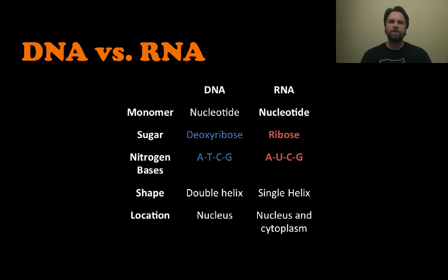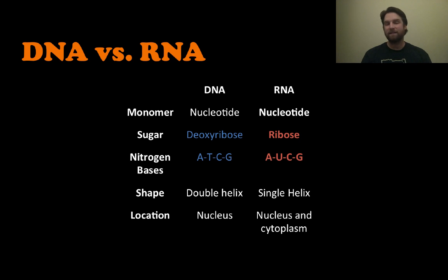Let's look at some differences between DNA and RNA. They're both made of monomer nucleotides, but the sugar is slightly different — deoxyribose sugar in DNA and ribose sugar in RNA. The bases are also slightly different. In DNA we have A, T, C, and G, while in RNA thymine is replaced with U, called uracil. DNA is a double helix while RNA is a single helix. DNA is located in the nucleus while RNA is located in both the nucleus and the cytoplasm.